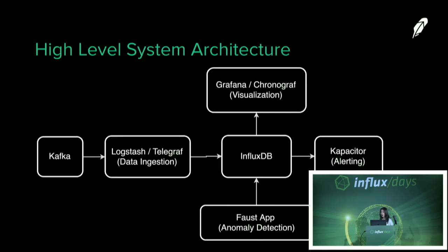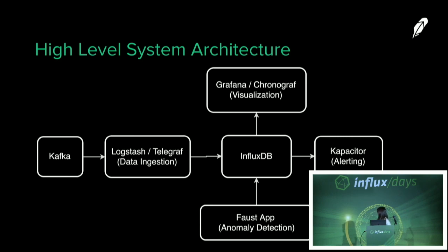Here is the overall high-level system architecture. We have time series data in Kafka, which gets ingested through Logstash into InfluxDB. Grafana is connected to InfluxDB for visualizing the time series. We use Kapacitor as the alerting service and the Faust application to compute and determine whether an incoming data point is abnormal or not.